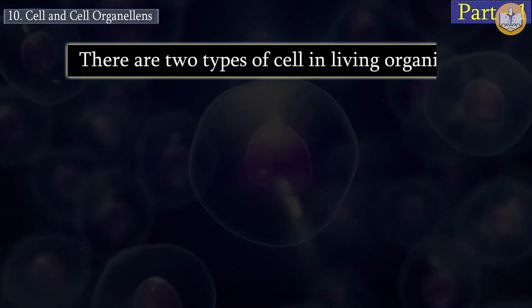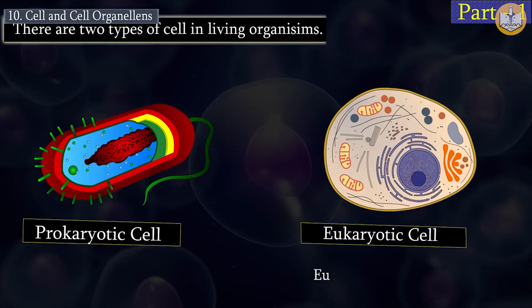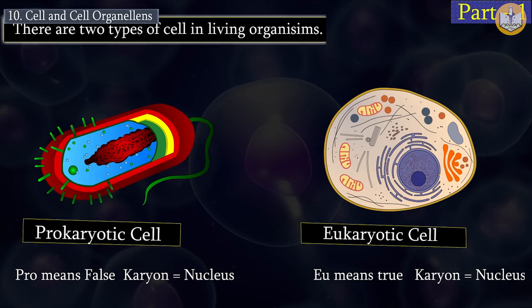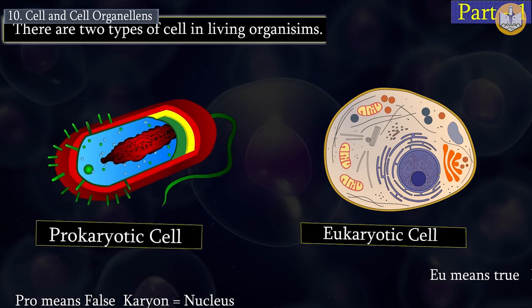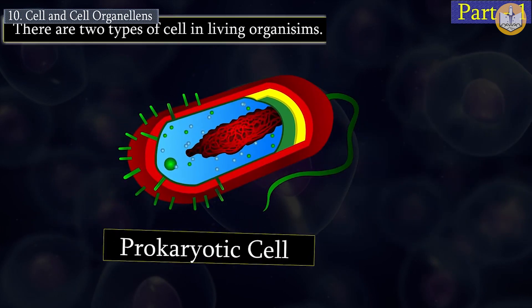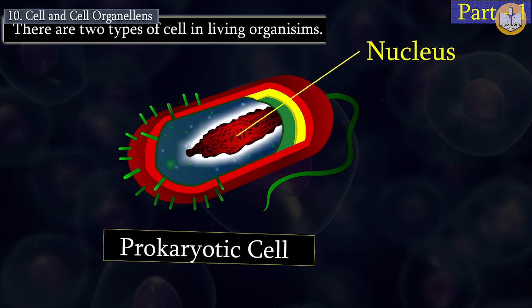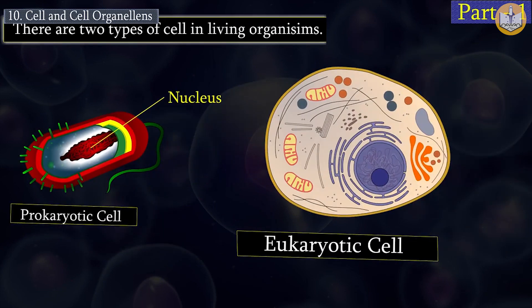There are two types of cells in living organisms: prokaryotic cell and eukaryotic cell. 'Eu' means true and 'karyon' means nucleus; 'pro' means false and 'karyon' means nucleus. In prokaryotic cells, the nucleus is not defined and is scattered in the cytoplasm, while in eukaryotic cells the nucleus is a membrane-bounded structure.